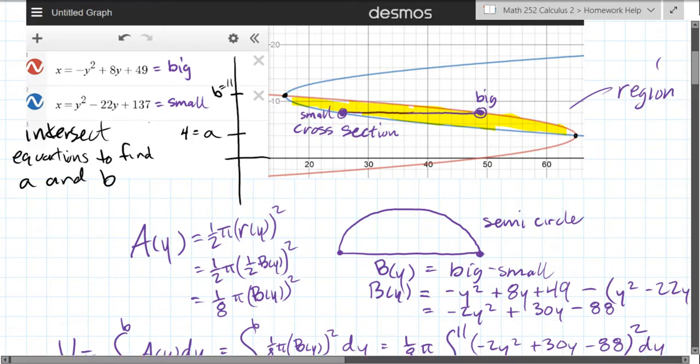What I also had to do, this right here is the diameter, not the radius. So I had to cut this b of y, if I called it b for base, I had to cut that base function in half.